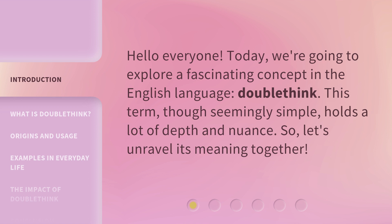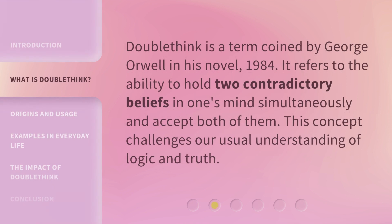This term, though seemingly simple, holds a lot of depth and nuance. Let's unravel its meaning together. Doublethink is a term coined by George Orwell in his novel 1984. It refers to the ability to hold two contradictory beliefs in one's mind simultaneously and accept both of them. This concept challenges our usual understanding of logic and truth.